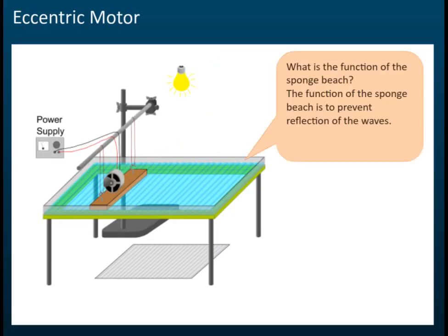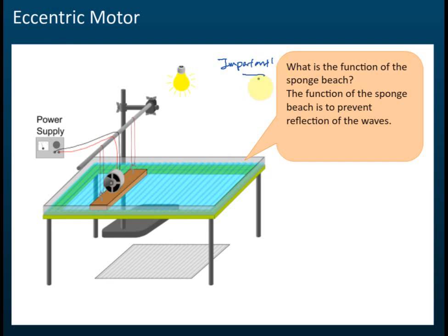The next thing you need to know is about the sponge beach. I told you that the sides of the ripple tank are surrounded by sponge — we call it the sponge beach. The function of the sponge beach is to prevent reflections of waves. When waves reach the side, they would be reflected back, so we put sponge there to absorb the wave's energy and prevent reflections, since we don't want reflected waves interfering with our observations. This is important and is often asked in exams.